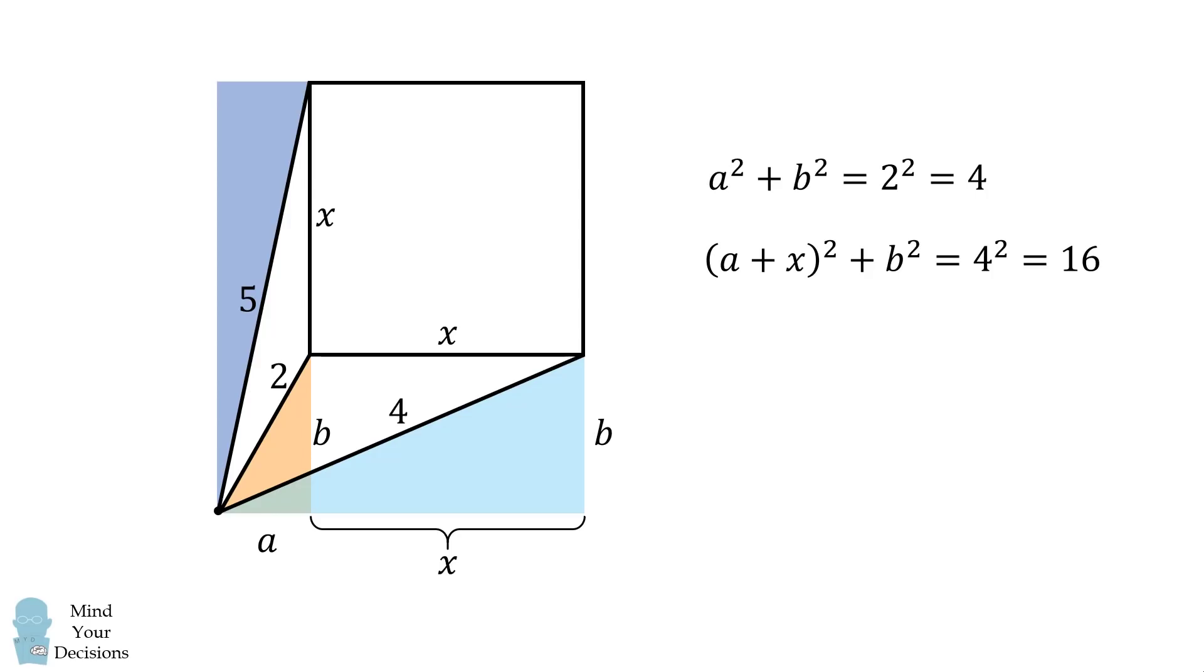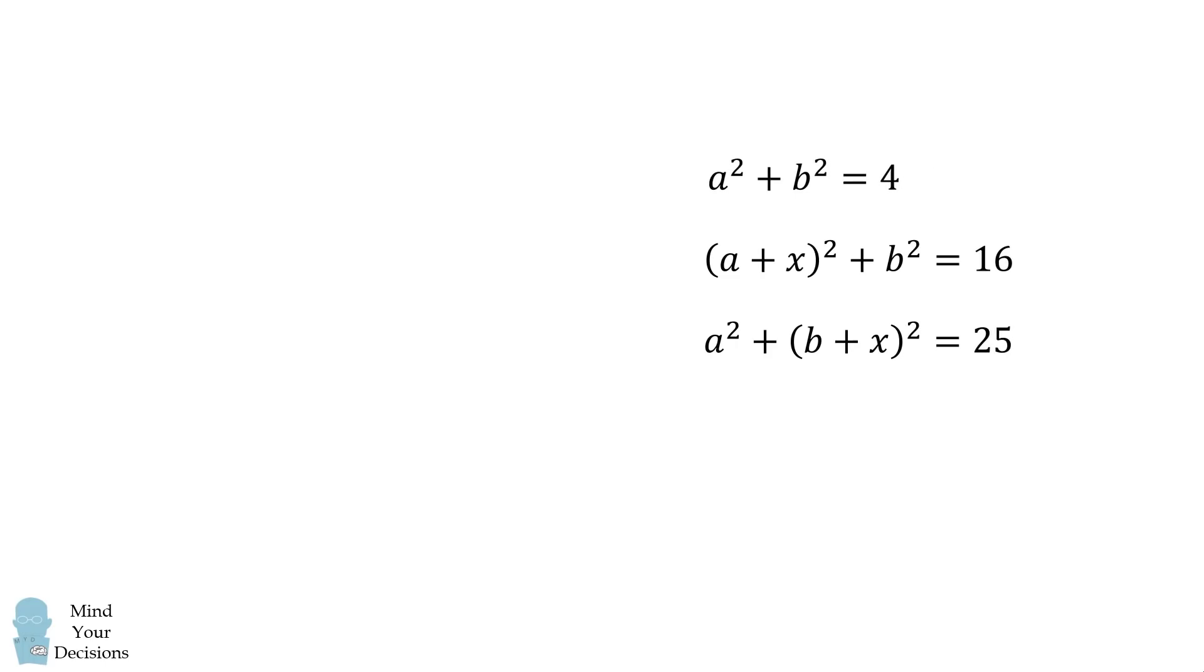We finally have this right triangle. One leg is equal to a, and the other leg is equal to x plus b. We thus have a squared plus the quantity b plus x squared is equal to 5 squared, and that's equal to 25. Let's now focus on these three equations.